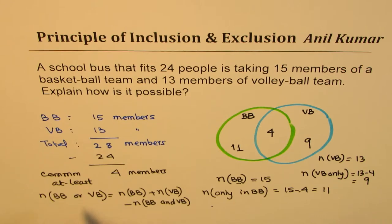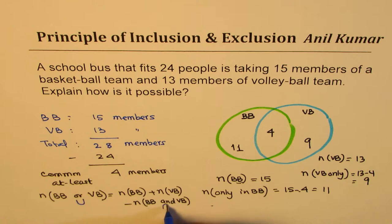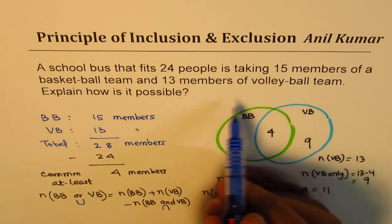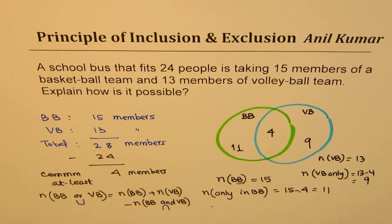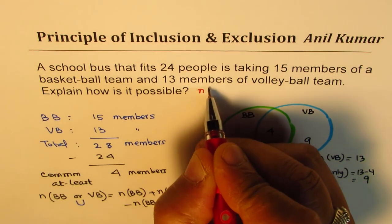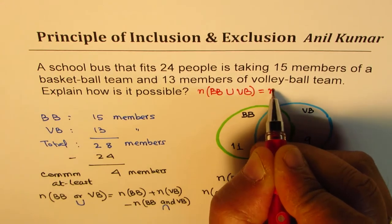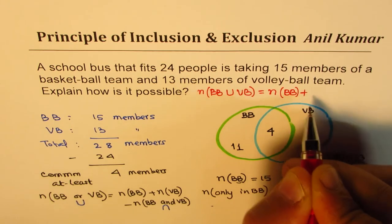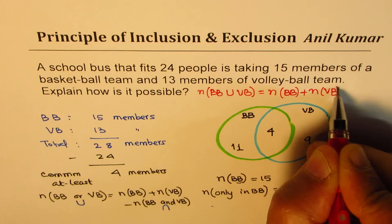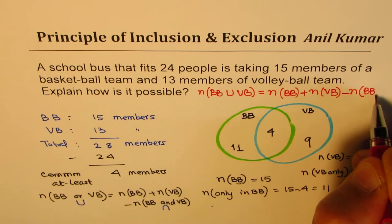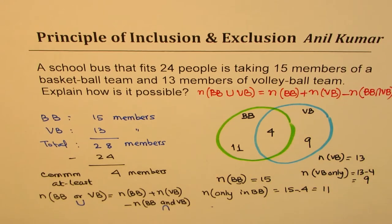We also use 'union' for 'or' and 'intersection' for 'and'. So the formula is: the number of members in basketball team or volleyball team equals the number of members in basketball team plus the number of members in volleyball team, take away the number of members common to both — that means the intersection of volleyball and basketball team.